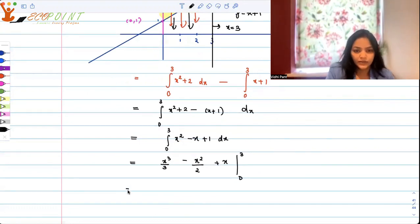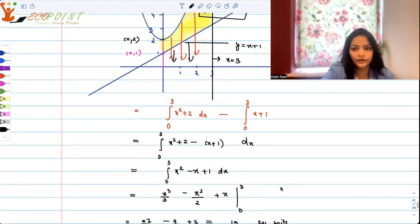So that's going to give us 27 by 3 minus 9 by 2 plus 3. And that's going to be 15 upon 2 square units.